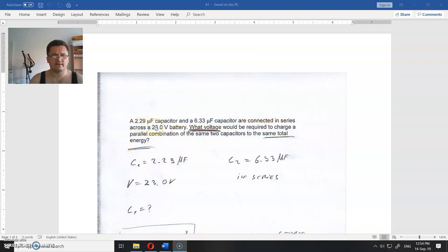A 2.29 µF capacitor and a 6.33 µF capacitor are connected in series with a 23V battery. This is the first capacitor, this is the second capacitor, and they are connected in series with a voltage source.